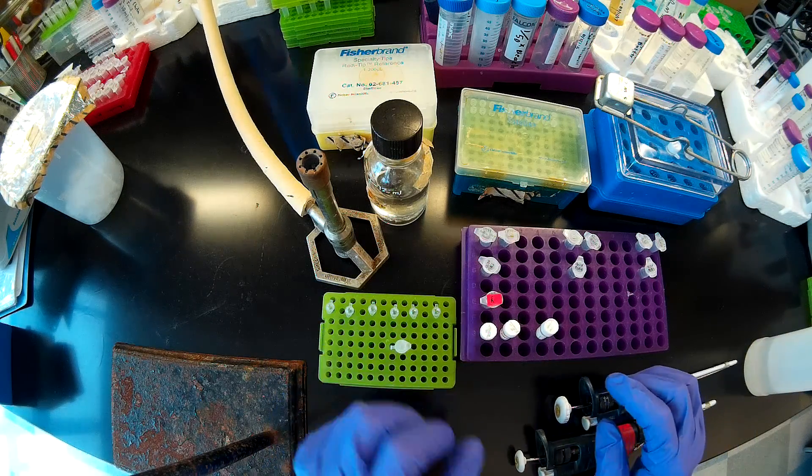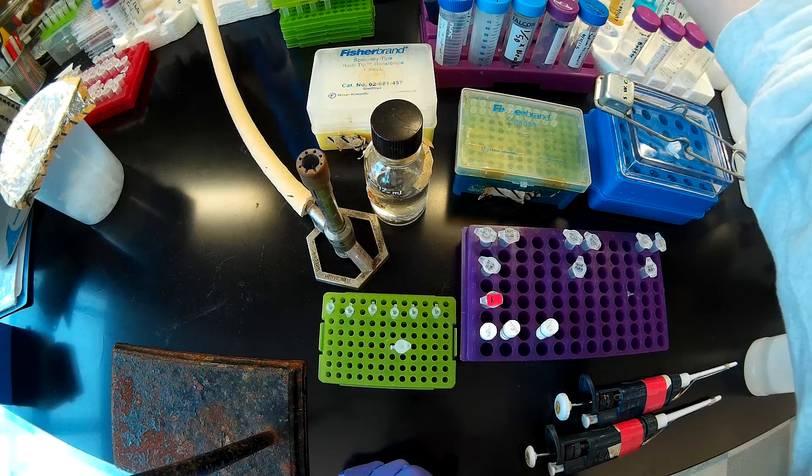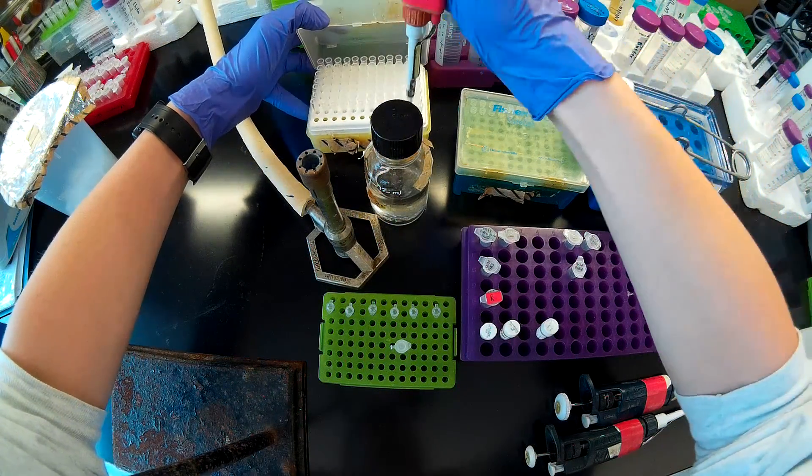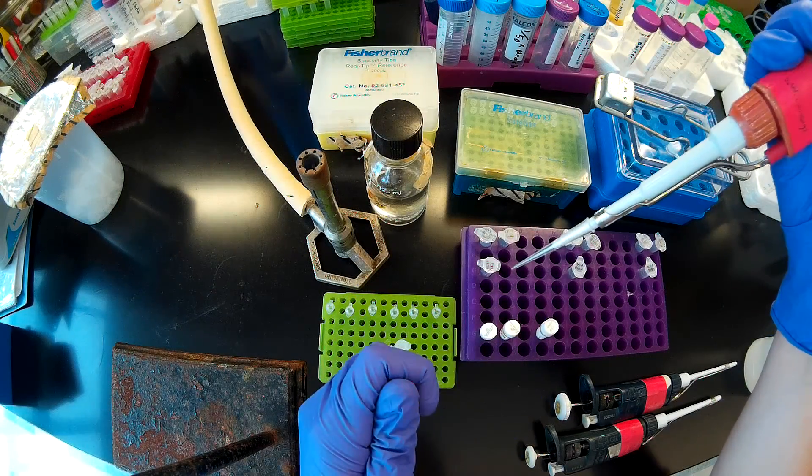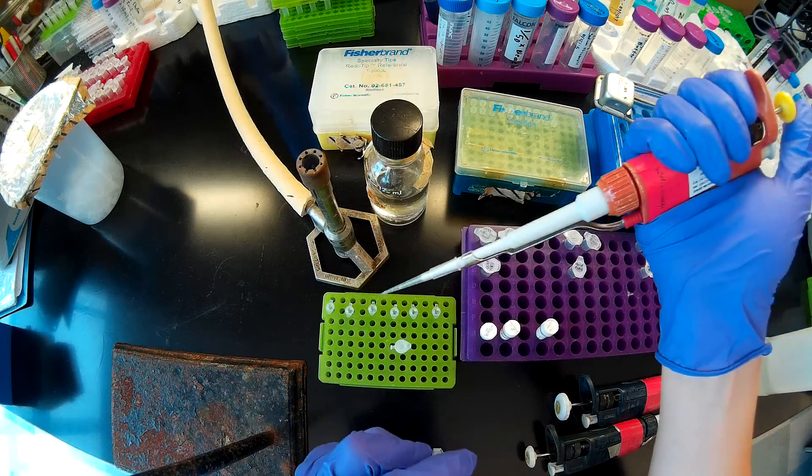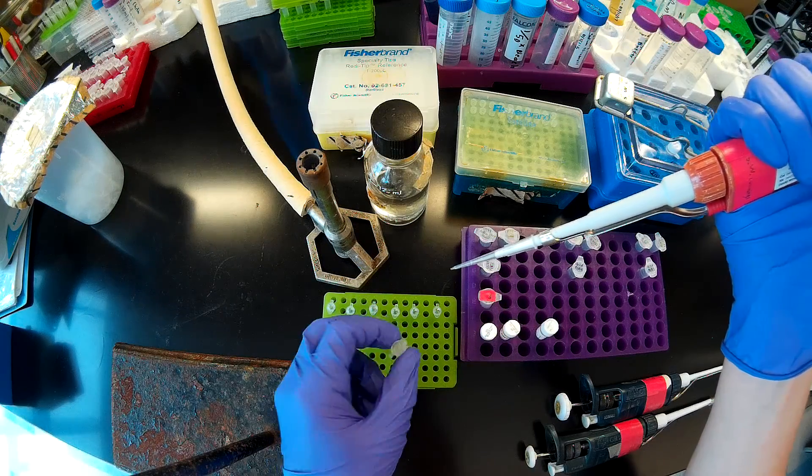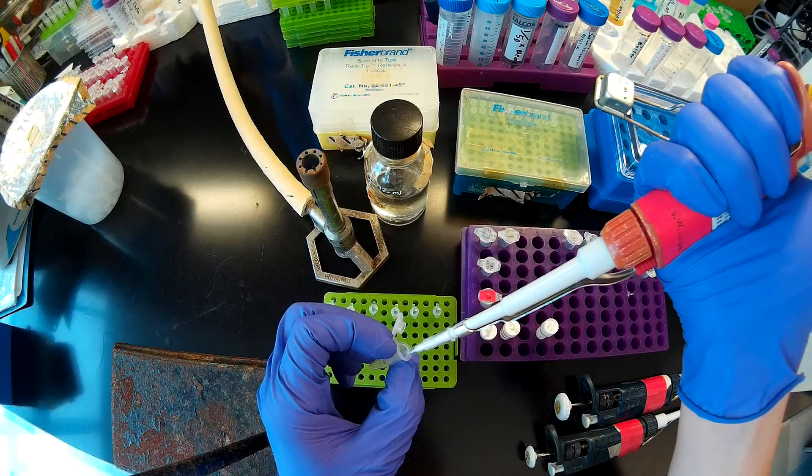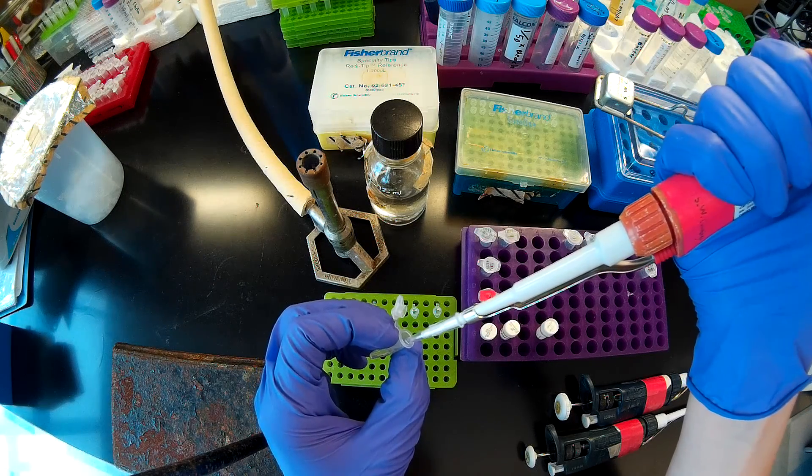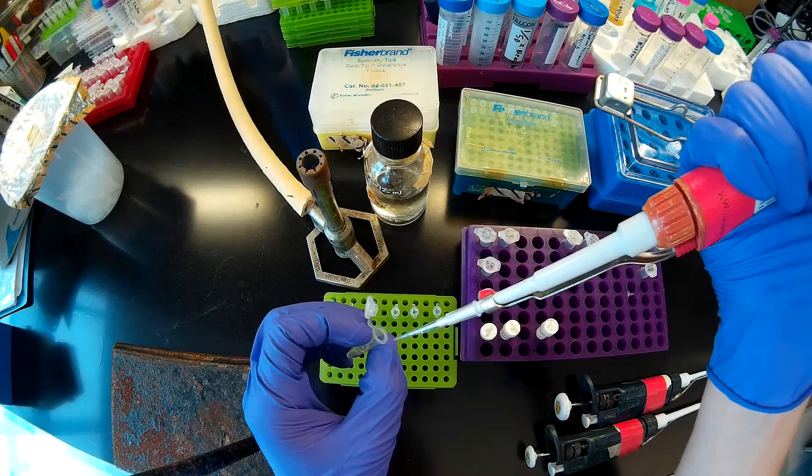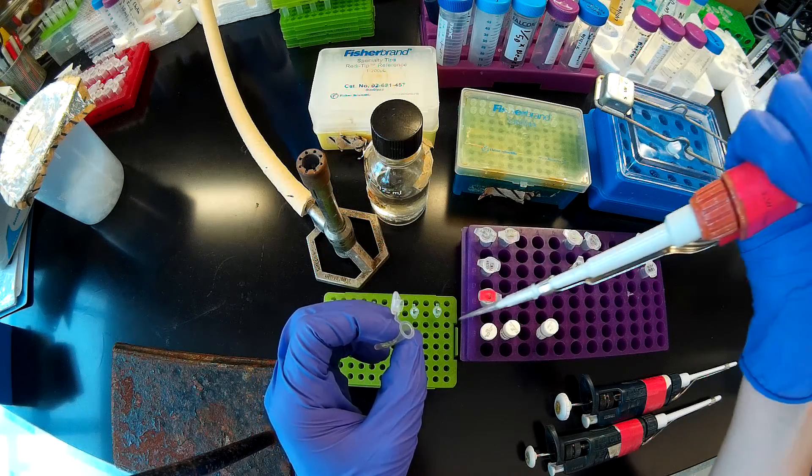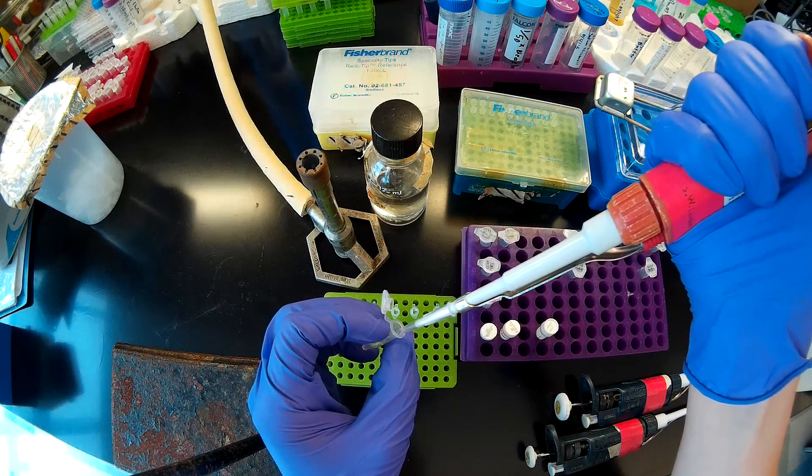After that, I'm going to add 15.5 microliters of my reverse primer, which I've had to cover here because it has proprietary information on the label. Pipetting up and down to mix at each step. There's a droplet of liquid in there that I would rather not remain behind. Got that down.